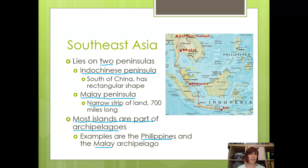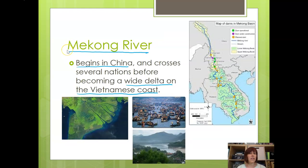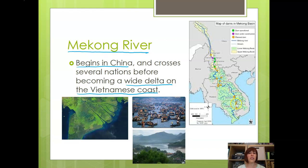Malaysia also has a series of islands. The dominant physical feature in this region is the Mekong River. The Mekong River begins all the way up in China and crosses several nations, coming down through Thailand, Laos, and Cambodia before ending as a wide delta along the coast of Vietnam.